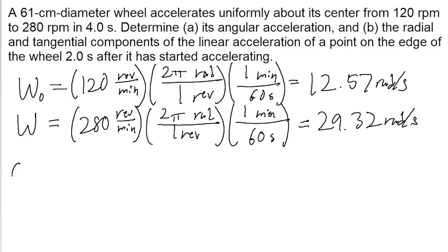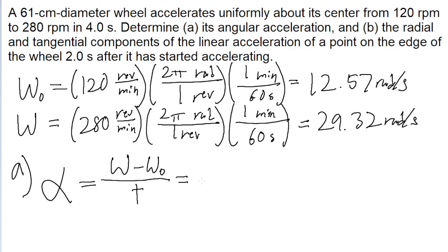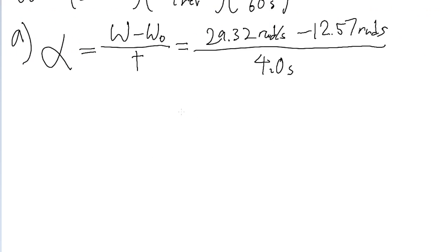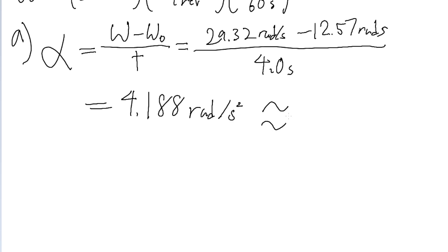Now let's actually get to solving the problem. Part A asks to determine the angular acceleration, which is easy to solve — we just take the change in angular velocity and divide by the time interval. So it's the final omega minus the initial omega divided by time: 29.32 minus 12.57 radians per second, divided by 4.0 seconds. The angular acceleration is 4.188 radians per second squared, which rounds to 4.2 radians per second squared.